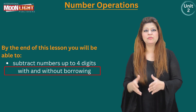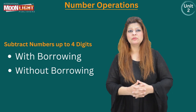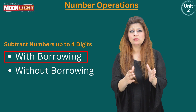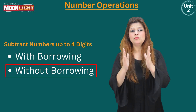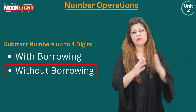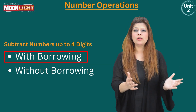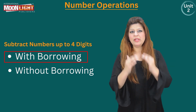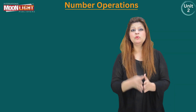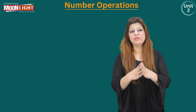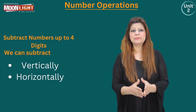By the end of this lesson you will be able to subtract numbers up to four digits with borrowing and without borrowing. Without borrowing means we are not going to take any borrow from our neighboring number. With borrowing means we are going to take a borrow from our neighboring digit and then regroup the numbers accordingly. We are going to subtract the numbers vertically as well as horizontally.